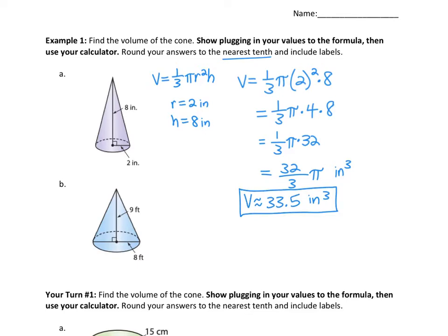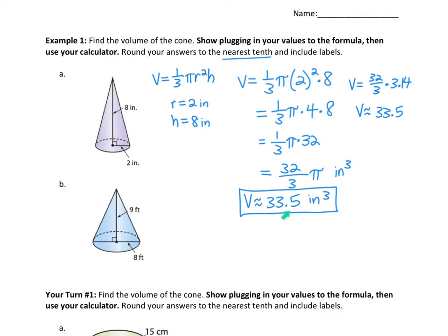That used actual pi. If you use the estimate 3.14 instead, you get 32/3 times 3.14. Typing that in gives approximately 33.5 as well — but the actual value was 33.51 with real pi, versus 33.49 with 3.14, which rounds to the same 33.5. The answers are close, but using 3.14 does introduce a small error. Here it is acceptable to use 3.14 as pi.